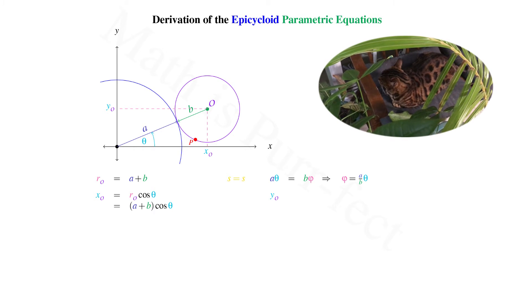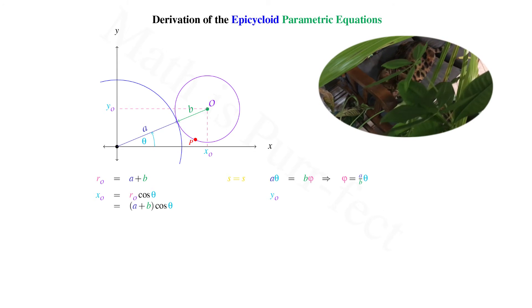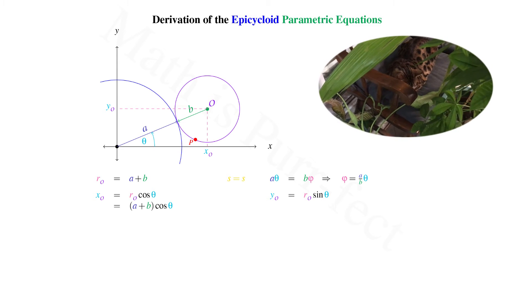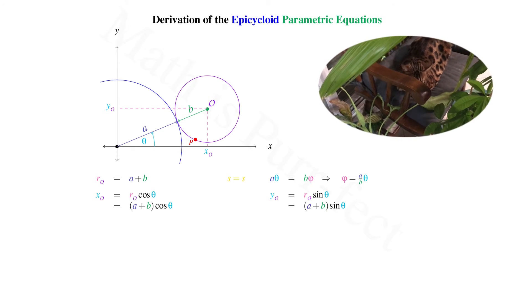We can now do the same for Y sub O. As the height is opposite angle theta, we know that its coordinate is given as R sub O sine theta, or A plus B sine theta.